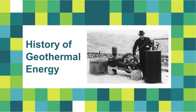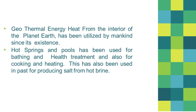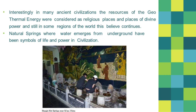History of geothermal energy: the ancient Romans used hot springs to heat their baths and homes, and this water was also used for medical and cooking purposes. Archaeological evidence shows that the first human use of geothermal resources occurred more than 10,000 years ago in North America, with the settlement of paleo-Indians around hot springs. Hot springs have been used for remedial bathing throughout the world, as well as for health treatment, cooking, heating, and producing salt from hot brine. In many ancient civilizations, geothermal resources were considered religious places of divine power, and natural springs were symbols of life and power.